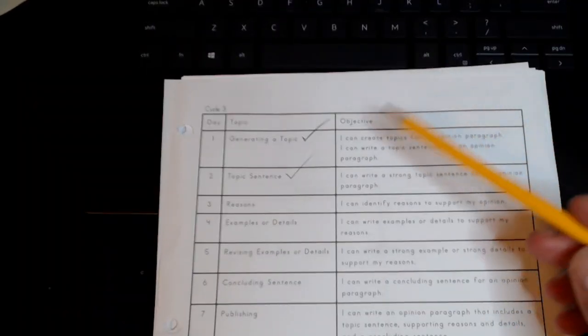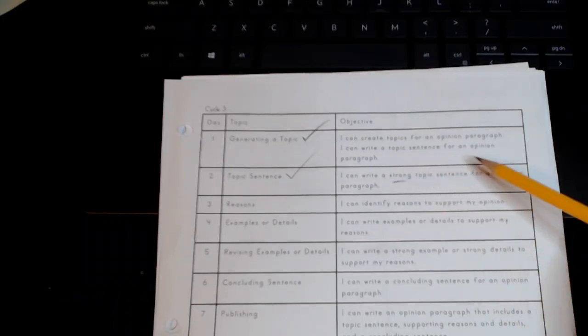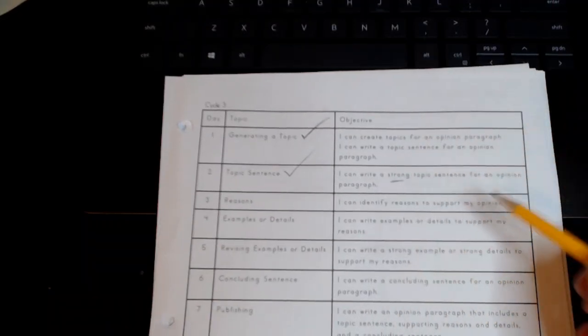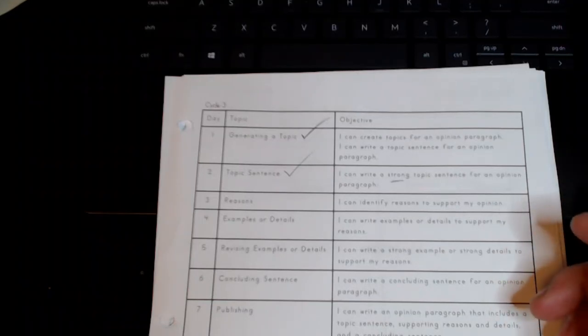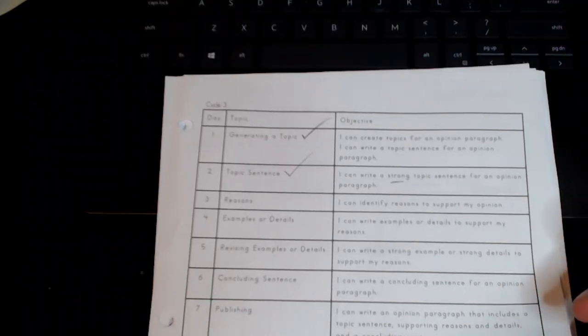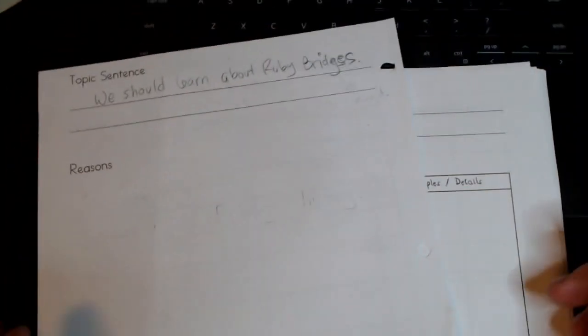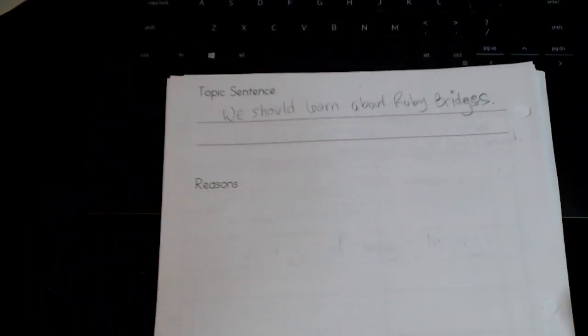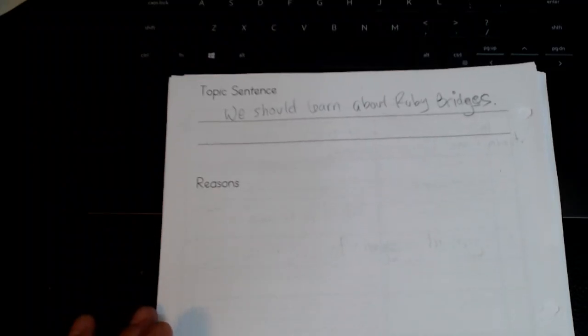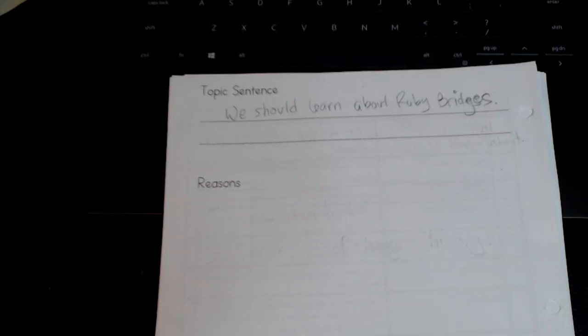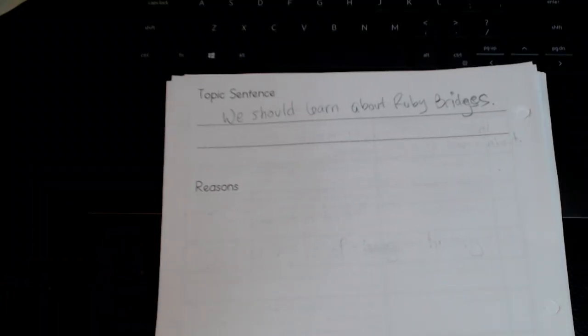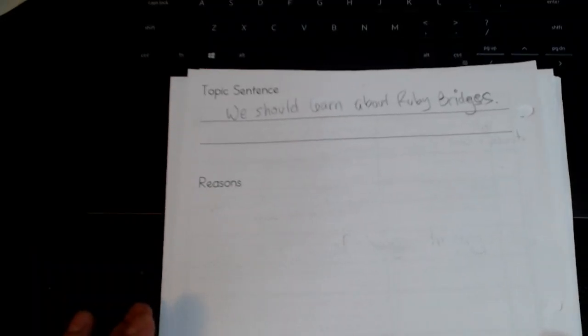Today's objective is I can write a strong topic sentence for an opinion paragraph. Yesterday we started off on page 24 brainstorming about who we were going to write about and then we created a very basic topic sentence just to get it started. In my case I wrote that we should learn about Ruby Bridges. Well that's all well and good but I really think we can make that sound a lot better.